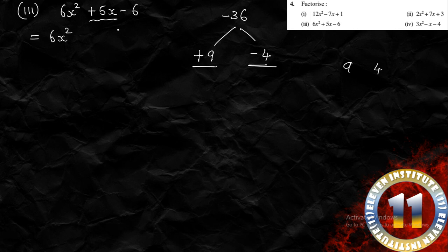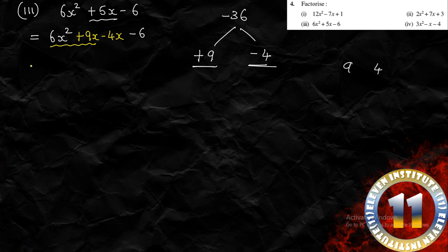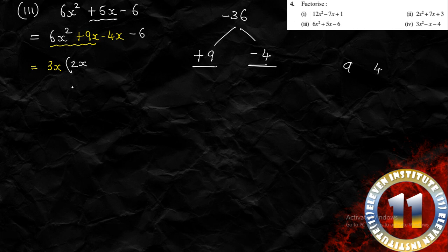We split the middle term: instead of 5x we write plus 9x minus 4x. Grouping the first two terms: 6x² and 9x have 3x in common, giving 3x(2x + 3). For the last two terms: minus 4x and minus 6 have minus 2 in common, giving minus 2(2x + 3). Since 2x + 3 is common in both groups, we take it out.